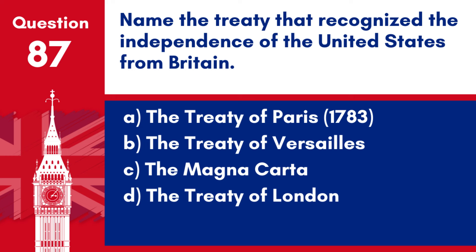Question 87. Name the treaty that recognised the independence of the United States from Britain. a. The Treaty of Paris 1783. b. The Treaty of Versailles. c. The Magna Carta. d. The Treaty of London.